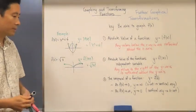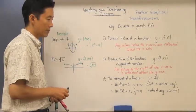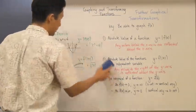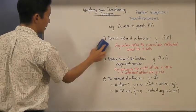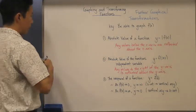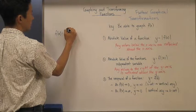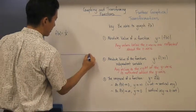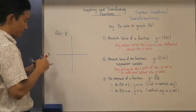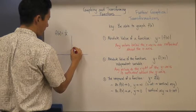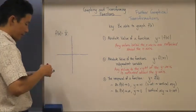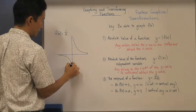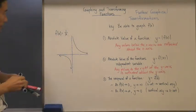This last transformation - the reciprocal of a function - is probably the most tricky. If we have a function f of x and we reciprocate the whole function, what happens? Let's take a very simple function: f of x is equal to 1 over x. If we draw that function, we know there's going to be a vertical asymptote at x equals zero, and it looks like a standard reciprocal curve. That's what this function looks like.